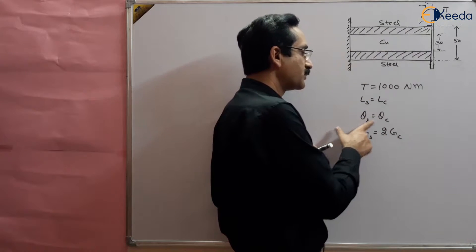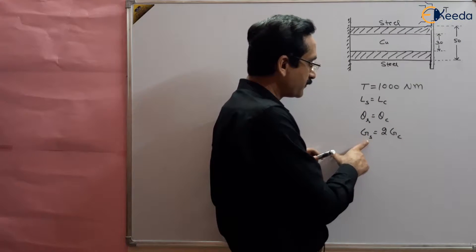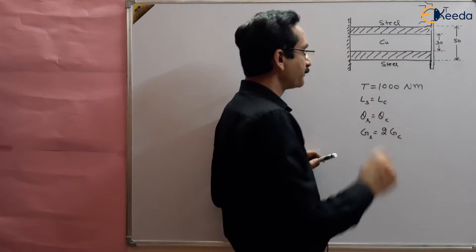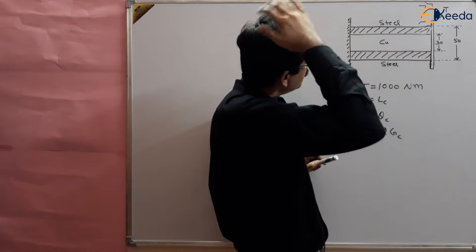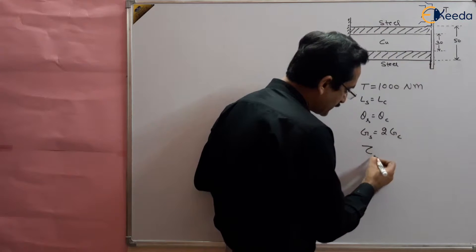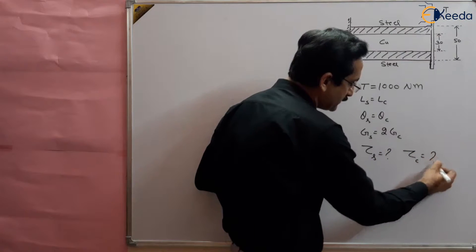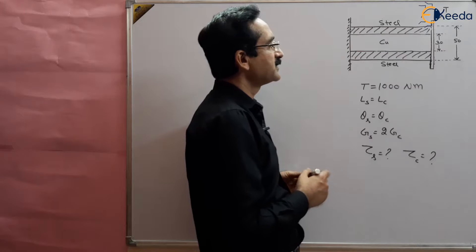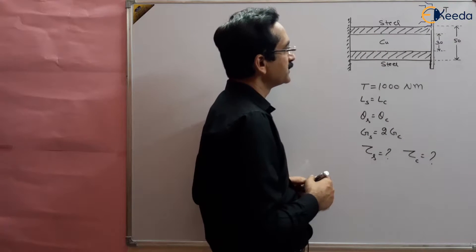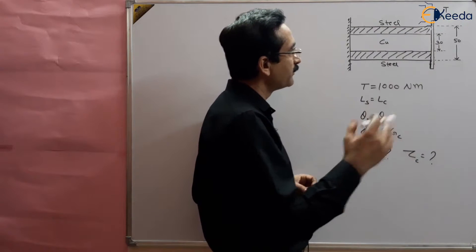So theta in steel should be equal to theta in copper. It is given that the modulus of rigidity of steel is equal to double the modulus of rigidity of copper. We have to find the maximum shear stress developed in steel and the maximum shear stress developed in copper. Maximum stress will be developed at the outer fiber of both materials.